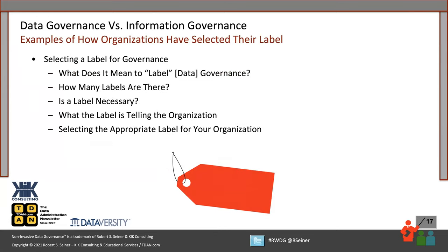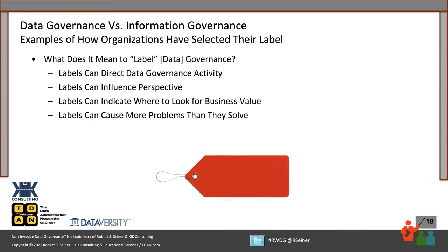Let's talk about how organizations select the label to put in front of the term governance — either data governance or information governance. Then we'll talk about how many different labels there are, whether a label is even necessary, and what it tells the organization when we apply a label to our governance program. We'll wrap up by talking about selecting the appropriate label for your organization.